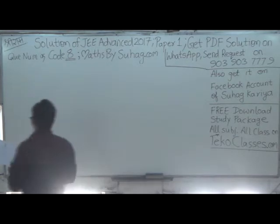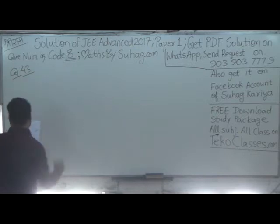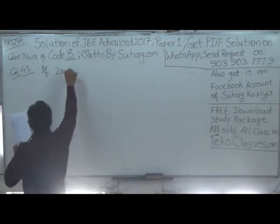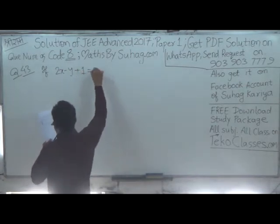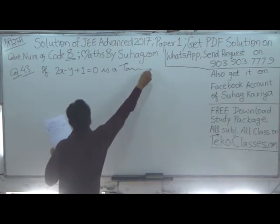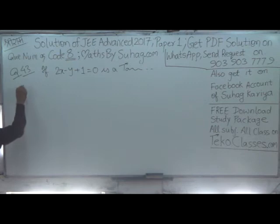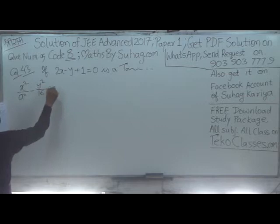Question number 43. According to COD 8, if 2x minus y plus 1 is equal to 0 is a tangent to the hyperbola x² upon a² minus y² upon 16 is equal to 1.